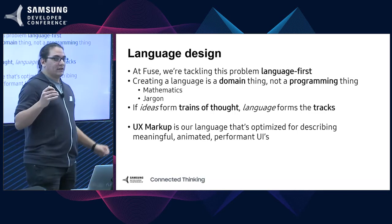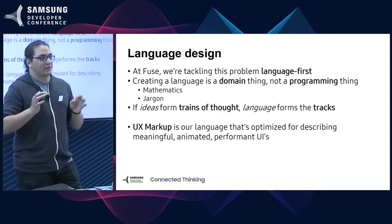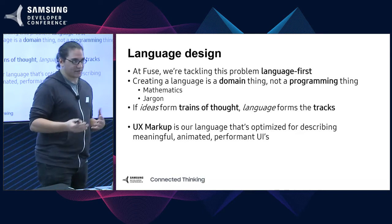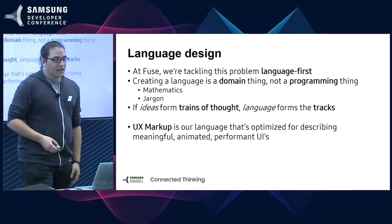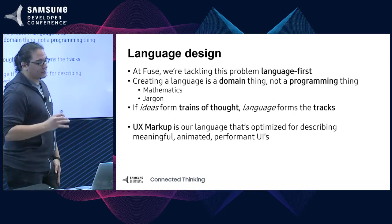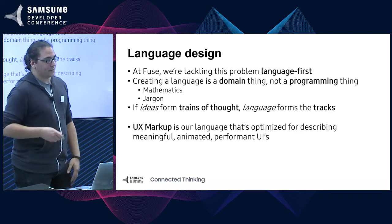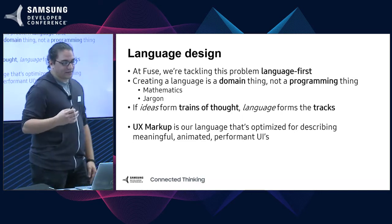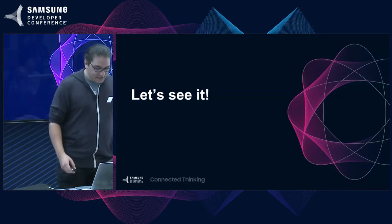Creating a language — when you hear that word at a conference like this, you think programming languages. But language is a domain thing and not just a programming thing. Mathematicians use language to describe relationships between numbers and sets. Ideas form trains of thought, and language is the tracks the trains run on. If we can describe the problem properly, the solutions become a lot easier to grasp. UX markup is our language, optimized for describing meaningful, animated, and performant UIs. So let's see what some of this looks like.